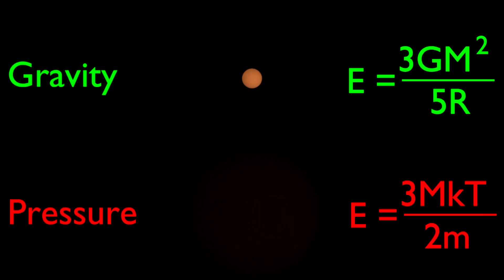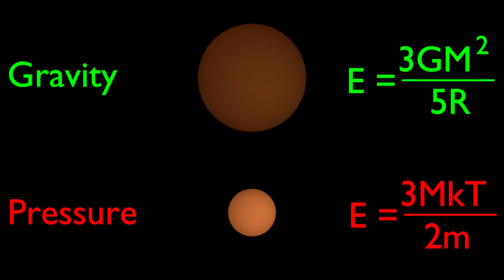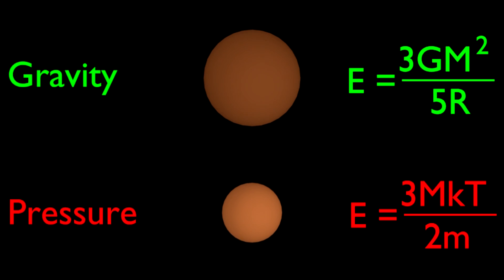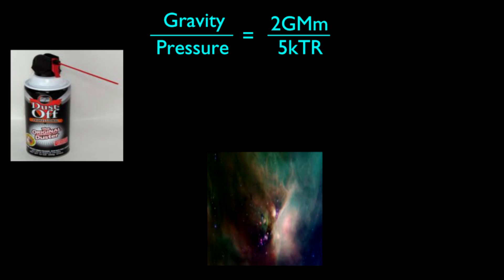And little m is the mass of the molecules that make up the gas. We care about the ratio of gravitational energy to pressure energy, which is 2·G·M·m / (5·k·T·R). Let's compute this ratio for a can of compressed air and for the clouds of gas and dust that astronomers say stars form from.